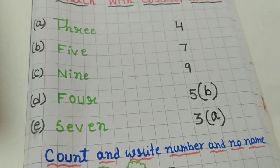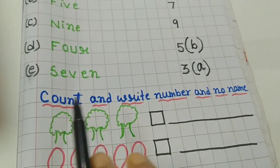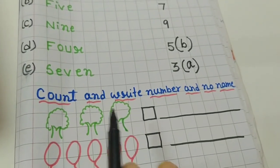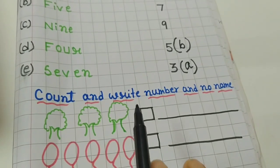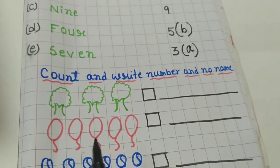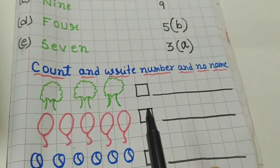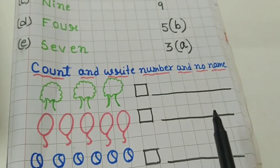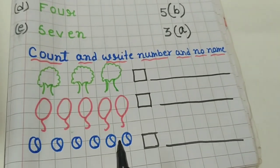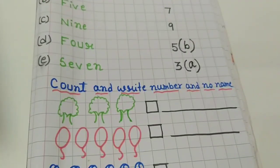Then the next heading is: count and write the number and number name. Here how many trees are there? One, two, three — so you have to write three and also write the number's name. Then count how many balloons there are, write the number and the number's name. Then count how many balls there are, write the number and the number's name. That's all for today.